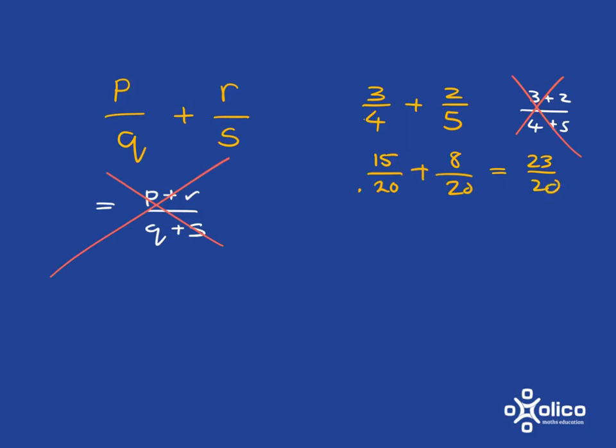So we can put that whole story into algebra. If we want to do p over q plus r over s, we need to find a common denominator. So we need to take the q from this denominator and we also need to take the s from that denominator.